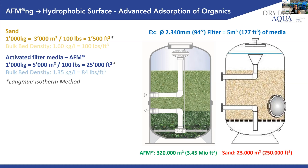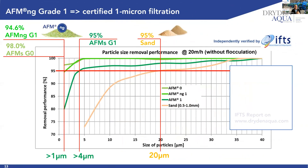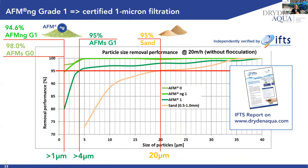As a consequence, if you take 95% removal performance as a benchmark, at 20 microns, sand filters start to drop performance, whereas our filter media can go down to — with our grade zero, the finest grade — 98% removal performance of one-micron particles. This is very important, especially in desalination pre-treatment.